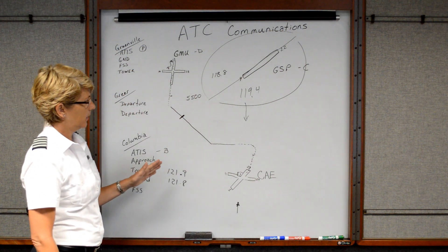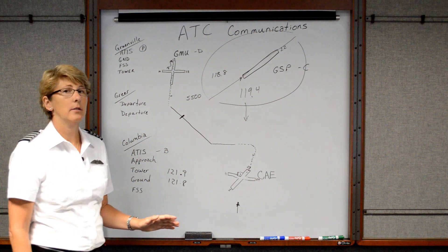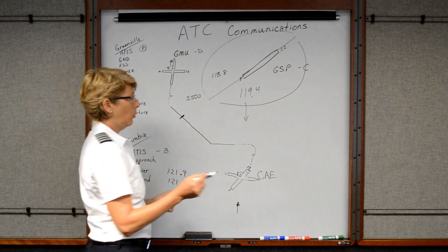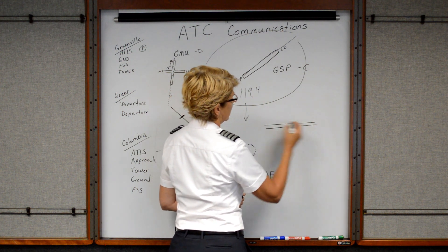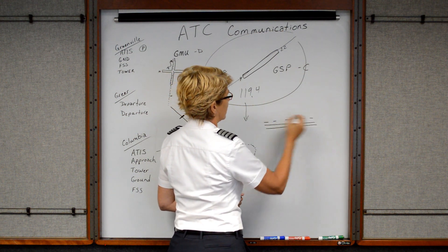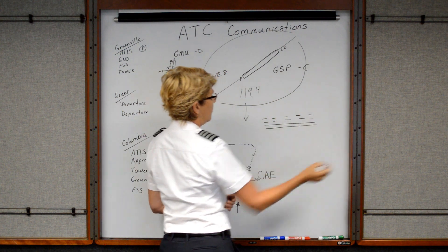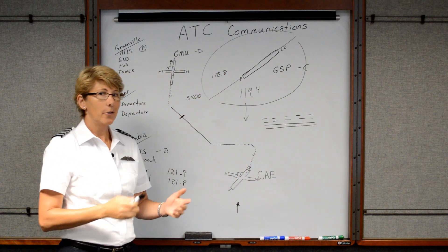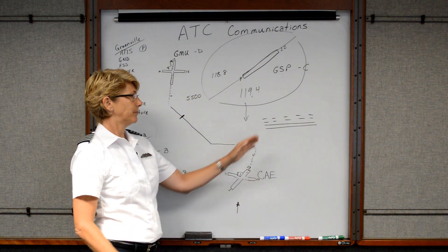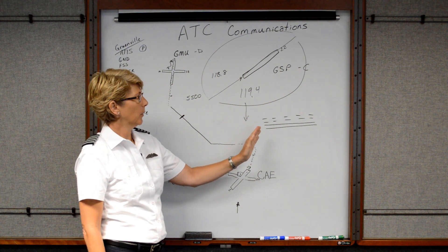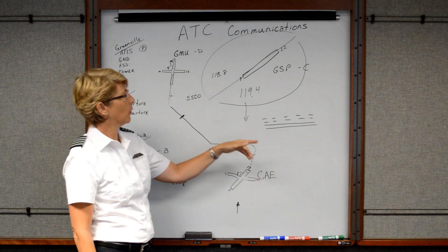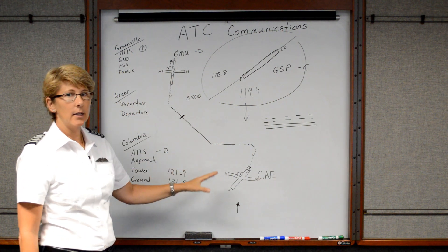Now one other thing I want to bring up in our ATC communications that's extremely important is the hold short line. So the hold short line is two solid lines and two dashed lines. And hopefully by this point, on lesson 13 or 14 of your flight training, you will know what a hold short line is. But just to be sure, we're going to bring it up again here because it's extremely important when we're dealing with ATC, air traffic control.